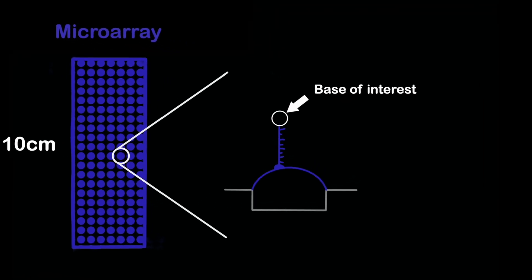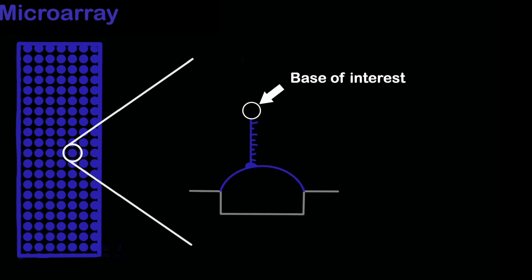The SNP microarray is a 10 centimeter slide with hundreds of thousands of tiny wells. Each well has a bead in it. Stuck on the surface of the bead are many copies of the same oligonucleotide probe DNA sequence. This sequence stops right before a base of interest, which is the location of a particular SNP. In this picture, I'm just drawing one oligonucleotide probe for simplicity.